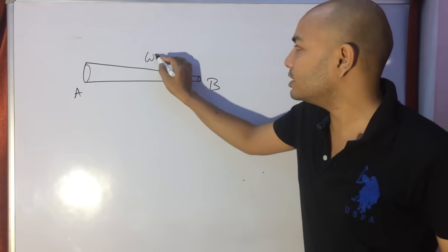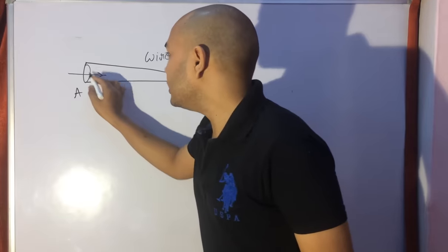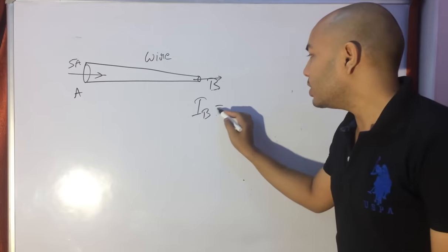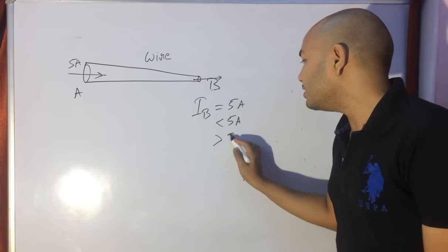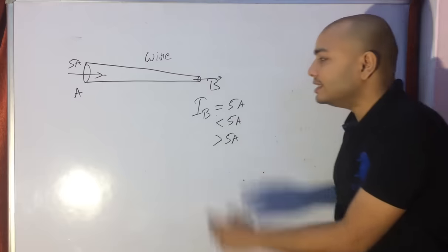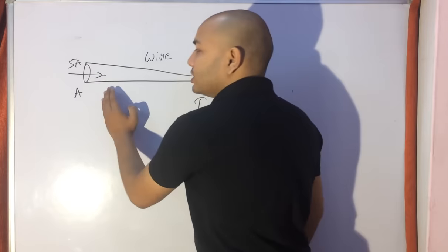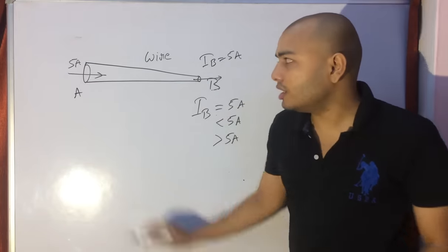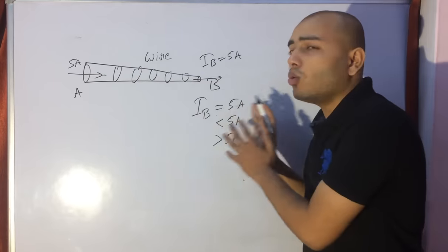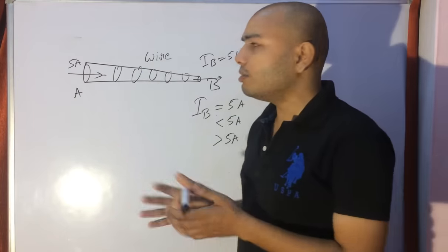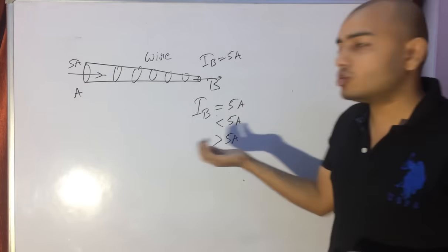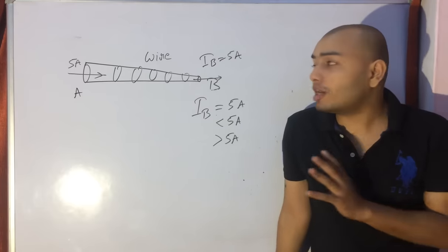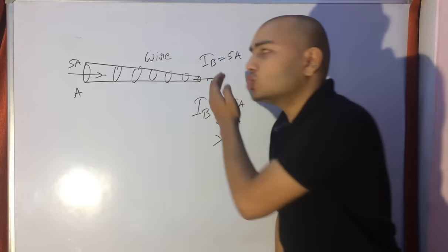Another conceptual question: I have a wire from A to B, and a current of 5 ampere flows in at A. What is the current at B — equal to, less than, or greater than 5 ampere, given that the cross-section at B is smaller? The answer is still 5 ampere. Current does not depend on cross-sectional area. The number of electrons entering must equal the number leaving, so current is the same throughout the entire wire.